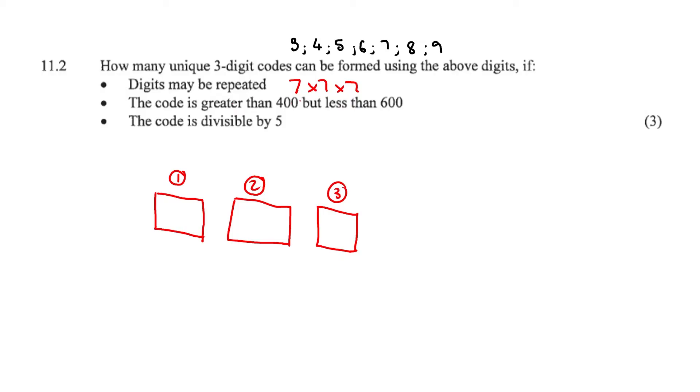The code is greater than 400 but less than 600. So if it's greater than 400, it can't start with the 3. That would be less than 400. It can start with the 4 or 5. It can't start with the 6 either because less than 600 doesn't include the 6. And then the 7, 8, and 9 would be far too greater than 600.